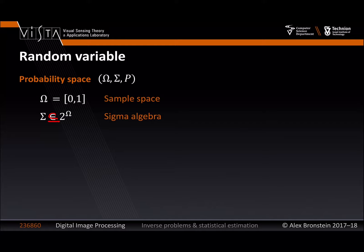Essentially, if we deal with a discrete and finite sample space, like tossing a die, you shouldn't care about the sigma algebra too much. An element in the sigma algebra is just an event. For example, if my sample space is the integers from 1 to 6, the sigma algebra contains all possible events — for example, the die falling on numbers 1, 2, and 5. When we go to uncountable spaces, taking the entire power set is too much; such a sigma algebra is too big and will prevent us from defining probability laws properly, so I need to take something smaller.